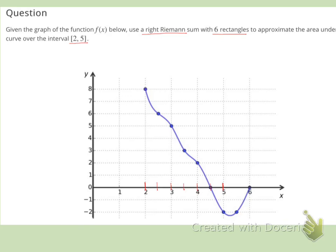Using a right Riemann sum means that the height of our rectangle comes at the right side of our interval. So from two to two and a half, the height of our rectangle is going to be using the point x equals two and a half.